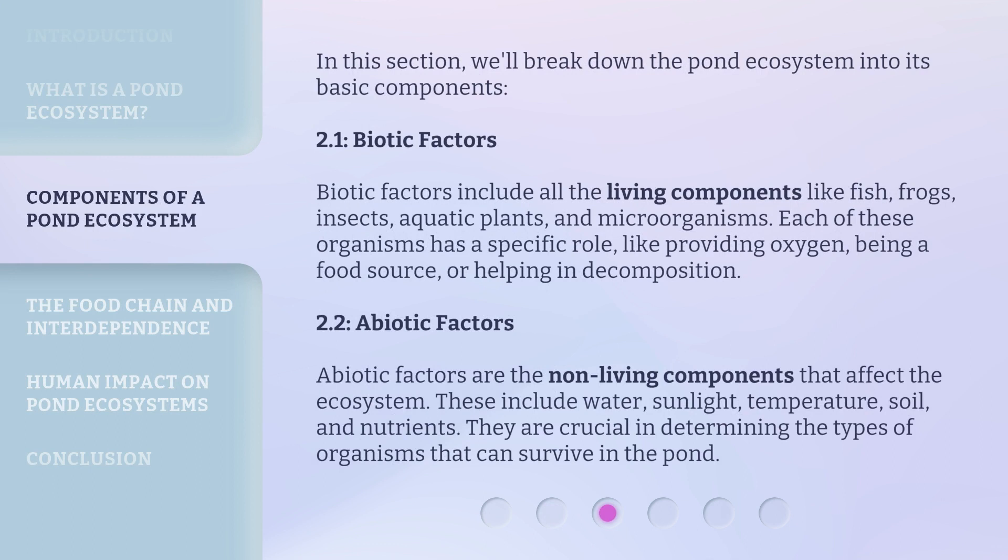In this section, we'll break down the pond ecosystem into its basic components. Biotic factors include all the living components like fish, frogs, insects, aquatic plants, and microorganisms. Each of these organisms has a specific role, like providing oxygen, being a food source, or helping in decomposition.